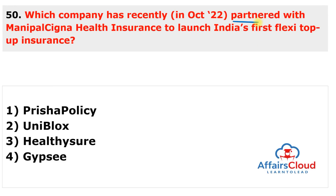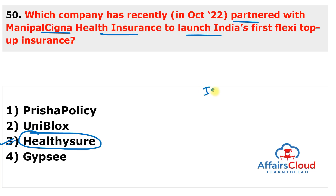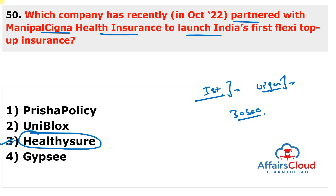Next question: which company recently partnered with Manipal Cigna Health Insurance to launch India's first flexi top-up insurance? The answer is Healthy Sure. Healthy Sure, an employee benefit insurance technology company, partnered with Manipal Cigna Health Insurance to launch India's first flexi top-up insurance, which allows employees to personalize and upgrade their corporate health insurance plans. Flexi top-up is powered by Healthy Sure's technology platform, through which a policy is issued digitally within 30 seconds of making a purchase.